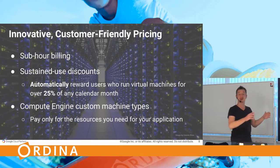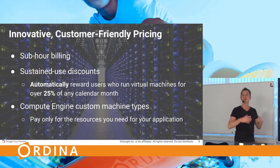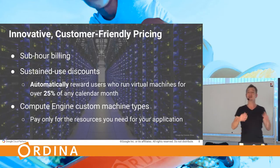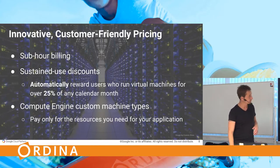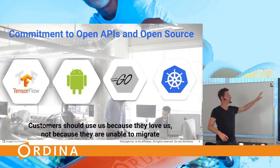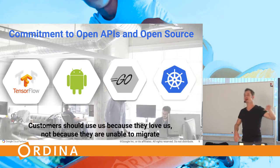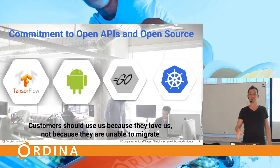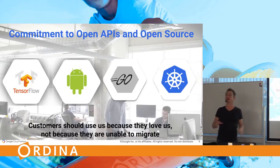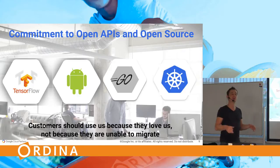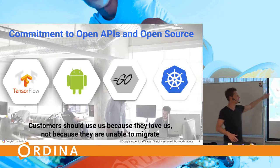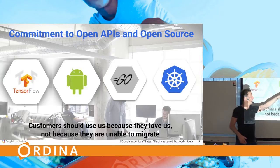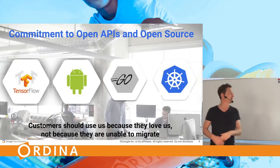What Amazon calls spot instances, Google calls preemptable instances. They will be killed at least once every 24 hours and can be killed at any time, but they come at 30% of the price of a normal instance. Commitment to open APIs and open source is very important to Google. They don't want you running on Google Cloud Platform because they've locked you in - they want to be technically the best. Examples of what they've open sourced include TensorFlow, Android running on Linux, the Go language, and Kubernetes.